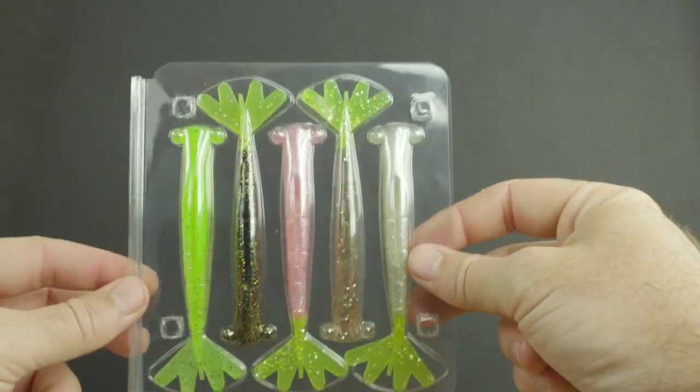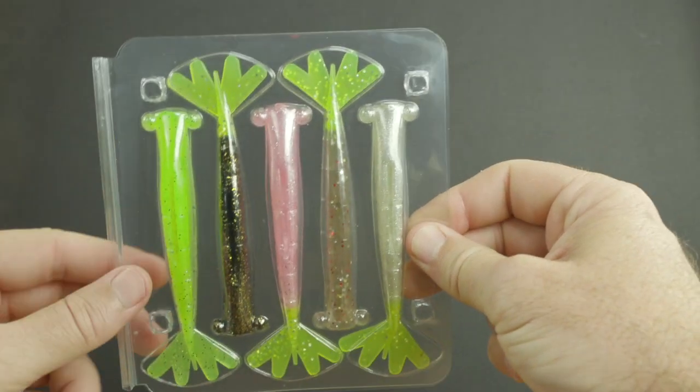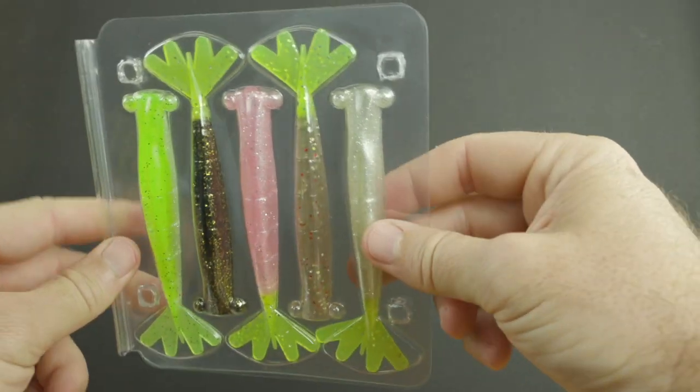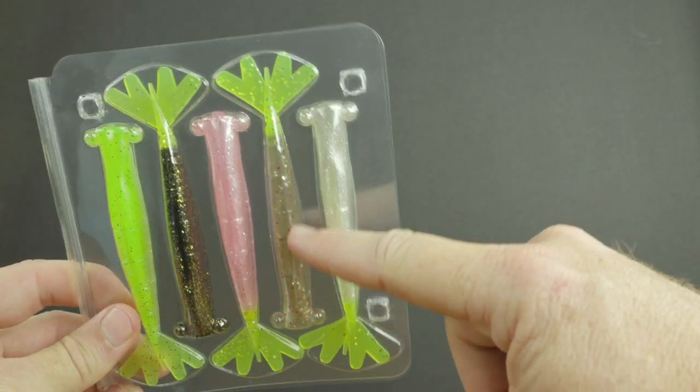Introducing the first ever sampler pack of PowerPrawn USA's - this is the chartreuse sampler pack. We had a lot of requests come in for having some chartreuse lures, some chartreuse options.